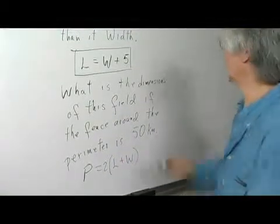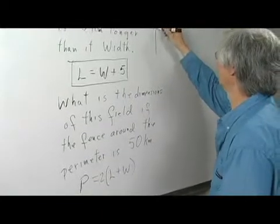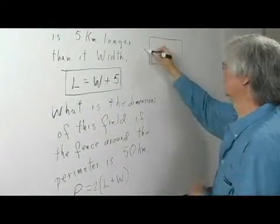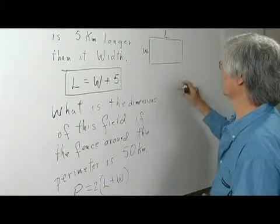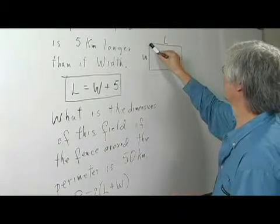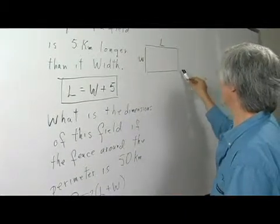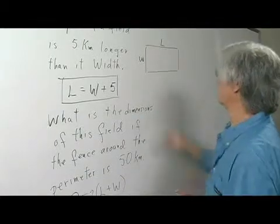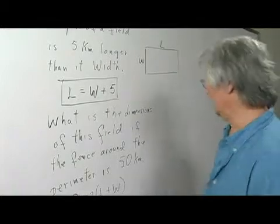Let me draw this. Here's a field. W and L. The perimeter is W plus L plus W plus L. That's why I have two times L plus W.